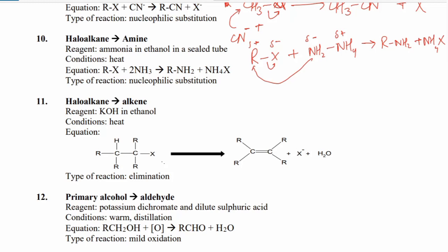Haloalkanes can also be converted into alkenes by potassium hydroxide in ethanol. When heated, an elimination reaction takes place — specifically hydrodehalogenation — which is the removal of hydrogen and halogen to form a double bond.